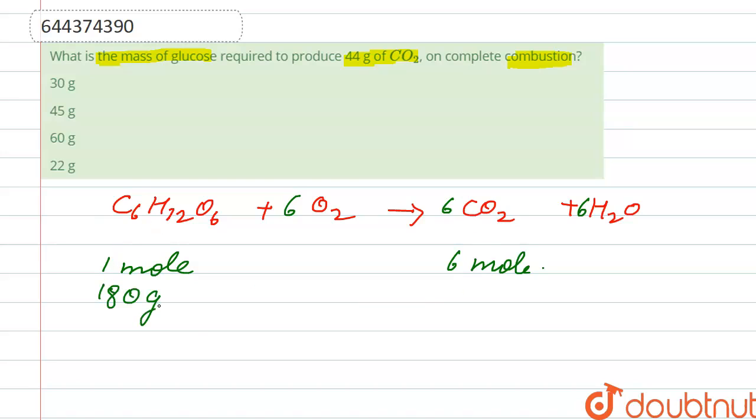Molar mass of glucose is 180 grams, and here we calculate the mass of CO2 produced. The molar mass of CO2 is 44, so if we calculate it gives us 254... that is 264 grams.